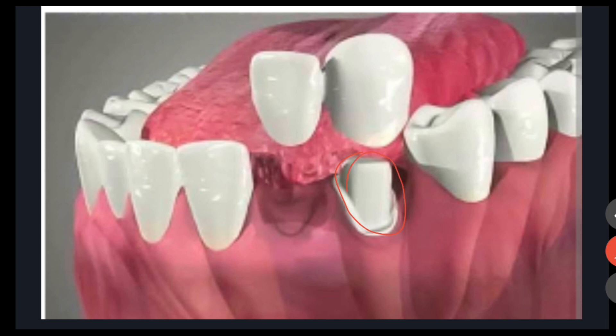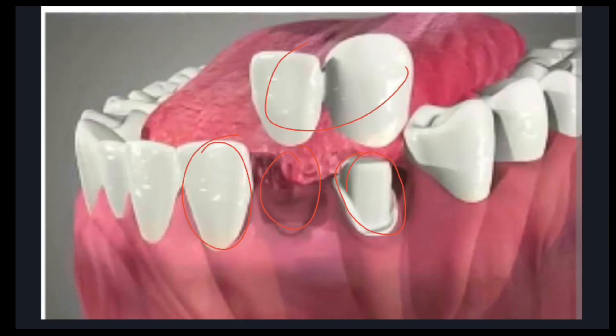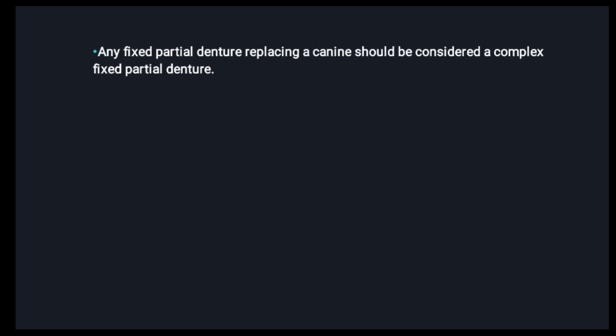Next is the cantilever abutment — where there is a prepared abutment tooth with a missing pontic on one side only, and the other side is not attached. In such a condition, sufficient tooth structure and more than average bone support must be present. A cantilever abutment at the central incisor is contraindicated because of the steep palatal vault and deep bite.